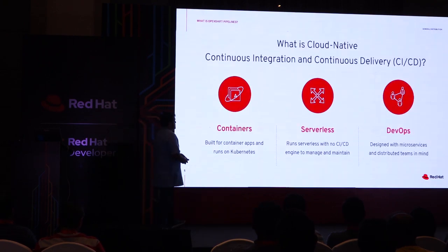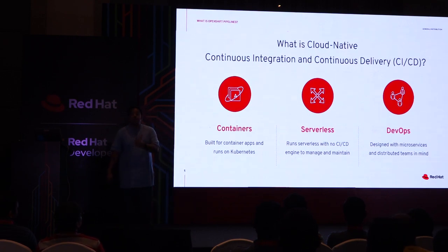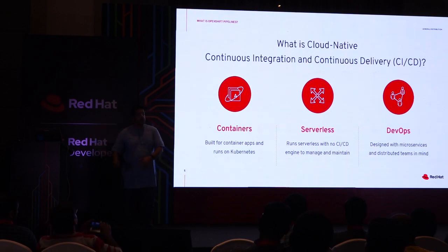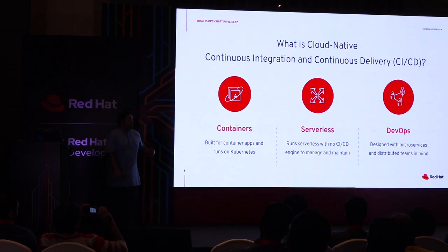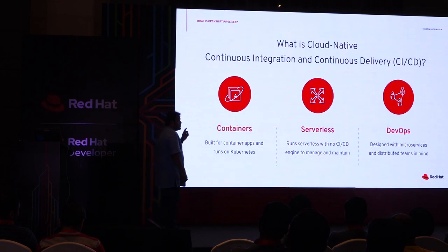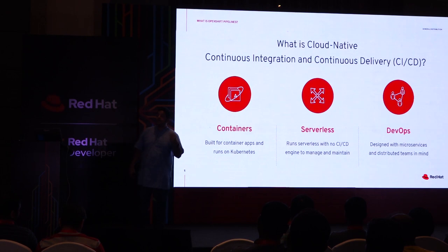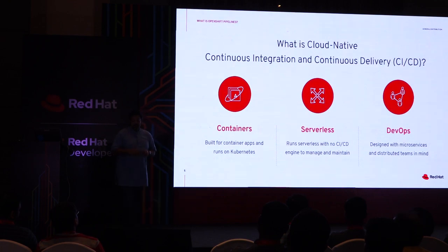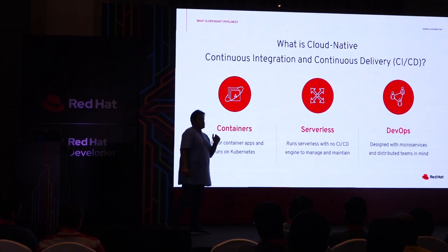OpenShift Pipelines runs on three basic principles: it's all containers, so everything runs in containers; it's serverless, meaning when a pipeline runs and finishes, the server comes down — every pipeline run starts a server, executes the build, and comes down; and it's designed for DevOps because it's container cloud-native and designed for microservices.